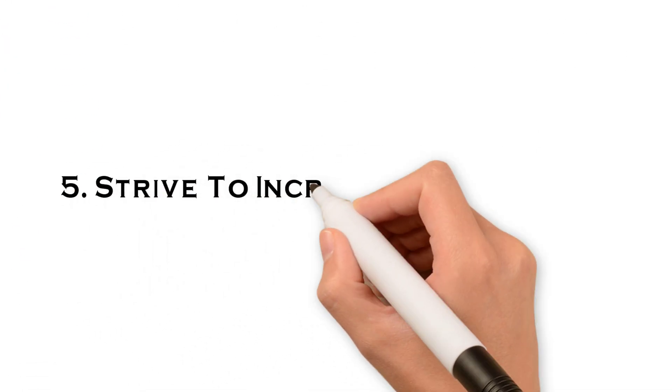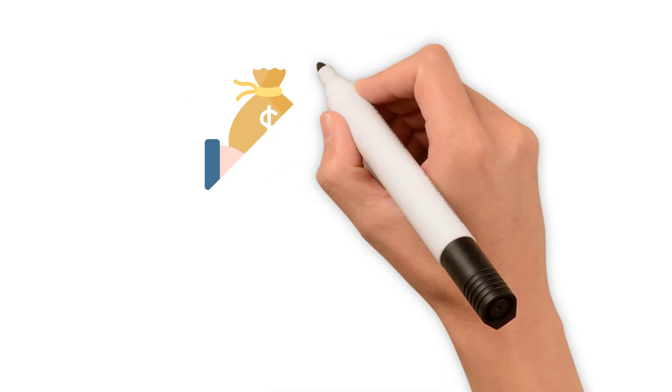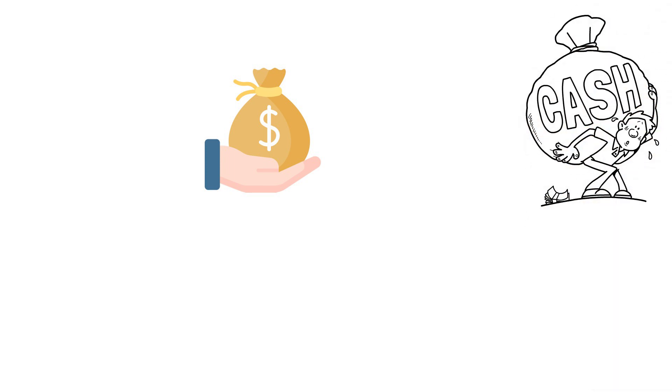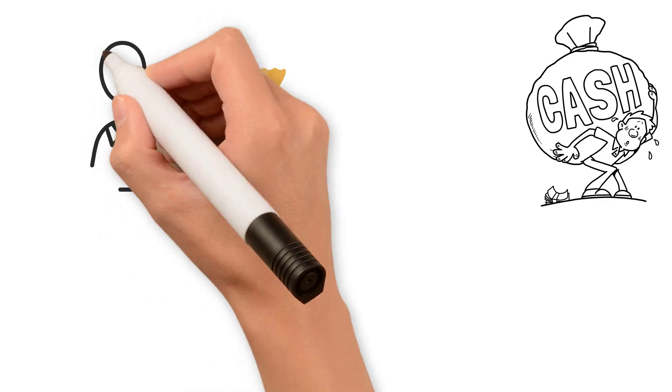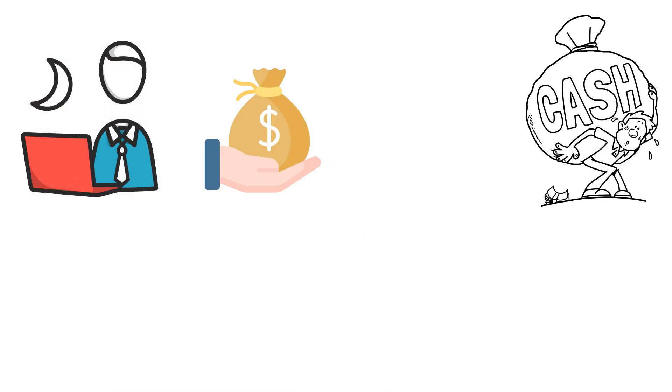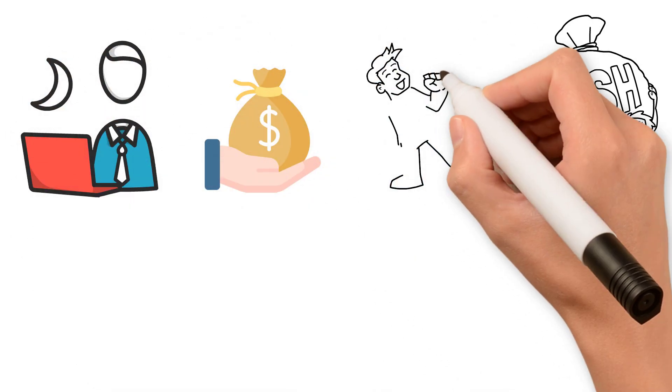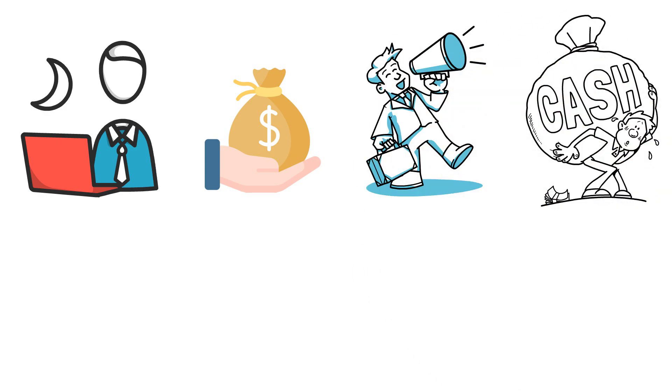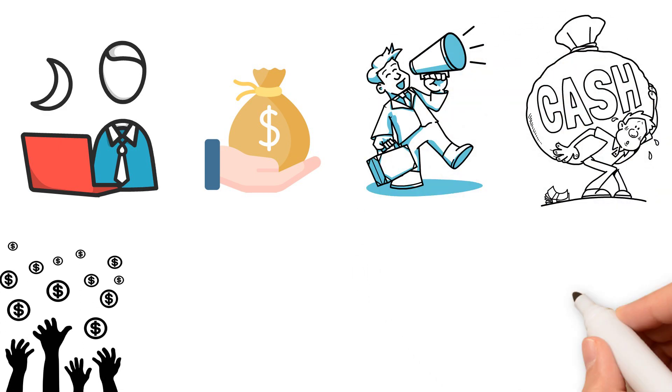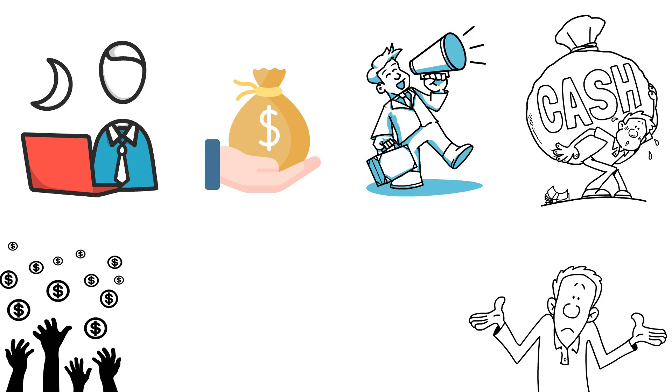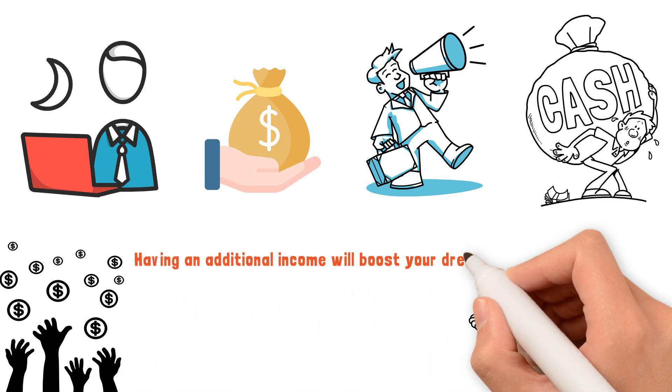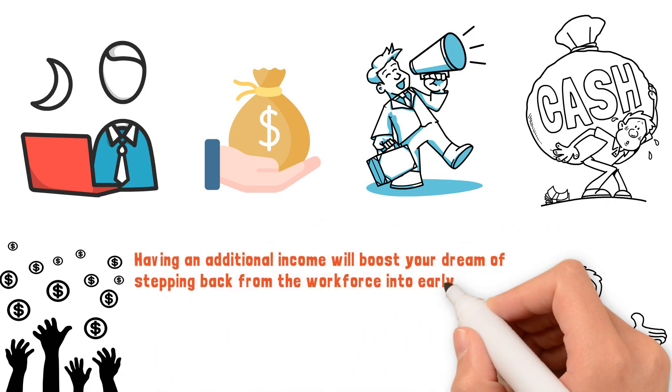Five, strive to increase your income. One of your strongest tools to build wealth is your income. If you want to retire early, you have to be creative about finding means to make extra cash. Whether that's through your 9-to-5 job with additional certifications, or you could decide to take on side hustles that you can turn into a small business. Just find ways to make extra income. Whatever that may look like for you, having an additional income will boost your dream of stepping back from the workforce into early retirement.